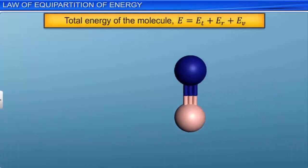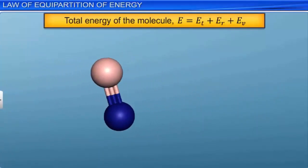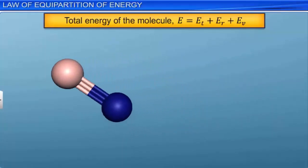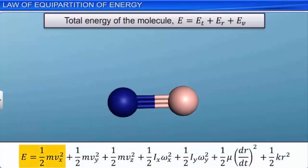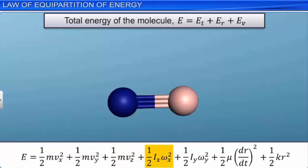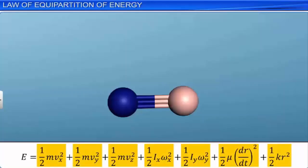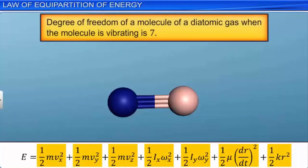The total energy of the molecule equals the sum of translational kinetic energy, rotational kinetic energy, and energy due to vibration: e = (1/2)mvx² + (1/2)mvy² + (1/2)mvz² + (1/2)Ix·ωx² + (1/2)Iy·ωy² + (1/2)μ(dr/dt)² + (1/2)kr². In this expression, the number of independent terms is 7. So the degree of freedom of a molecule of a diatomic gas when the molecule is vibrating is 7.